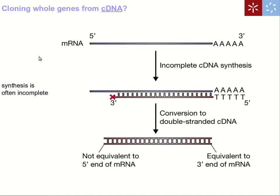We might ask: couldn't we use these technologies to clone entire genes from mRNA? We could, in theory, add a poly-T primer, extend it all the way to the 5' end, and add a forward primer. However, the problem is that reverse transcriptase is not very efficient — it has difficulty synthesizing long genes, and many DNA copies are incomplete. It is technically difficult to synthesize cDNA all the way to the original 5' end of the transcript.